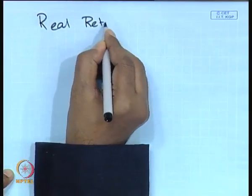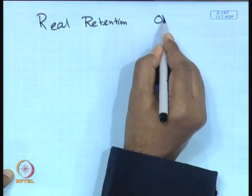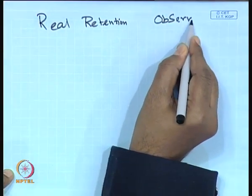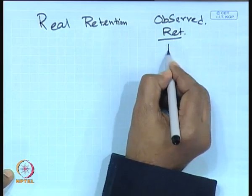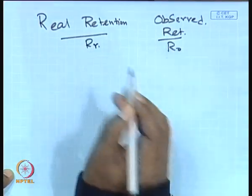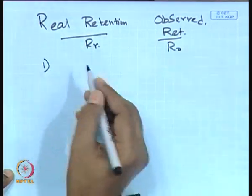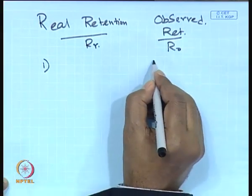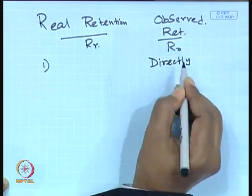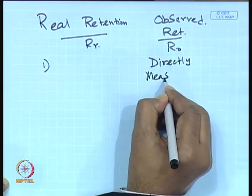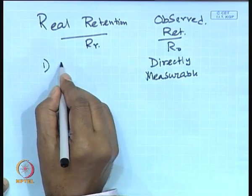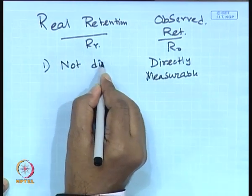Now we begin the second part of this lecture where we talk about the difference between real retention and observed retention. Observed retention is directly measurable experimentally, while real retention is not directly measurable.